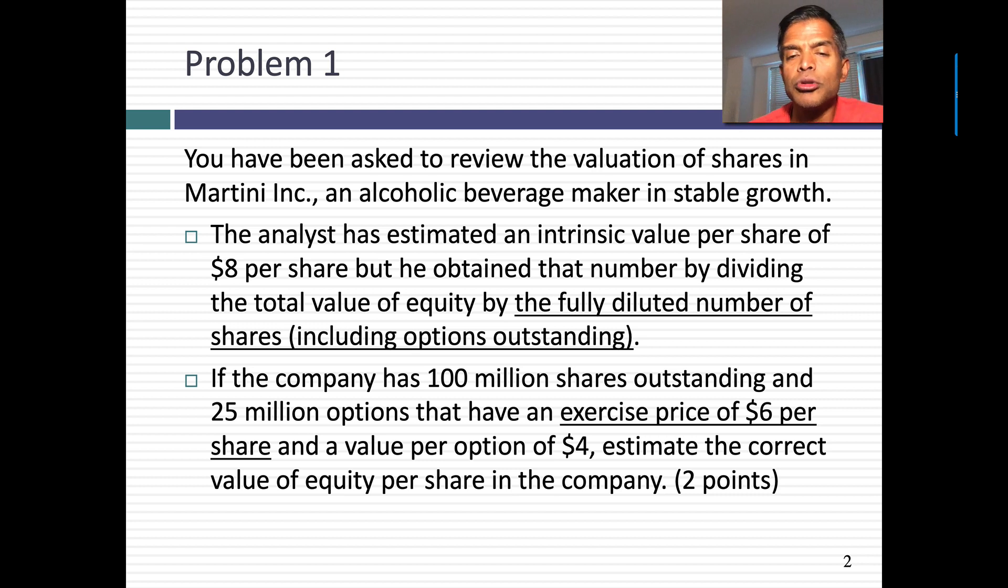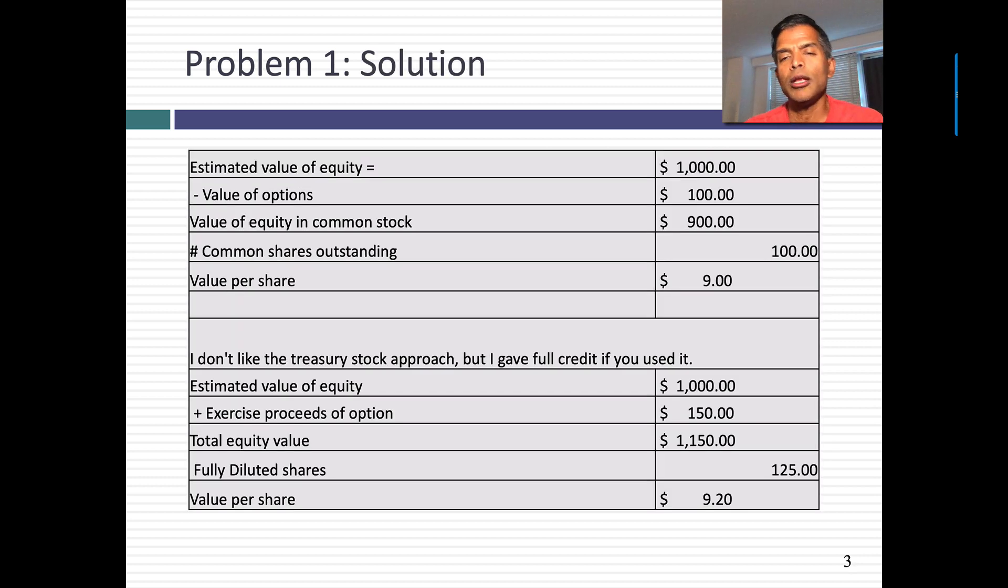Now, this was an unusual problem because you could have solved it in both ways. What are the two ways? There are two ways of dealing with options. The first is to do it right. What is doing it right? Start with the intrinsic value of equity, which in this case would be the $8 per share times 125. Remember, the analyst screwed up and multiplied and divided by 125. So you get a billion dollars as your value of equity.